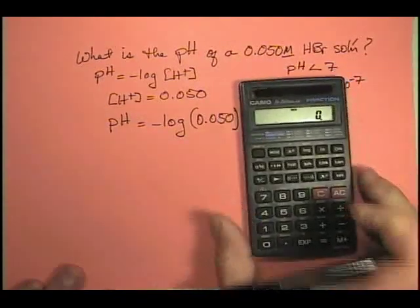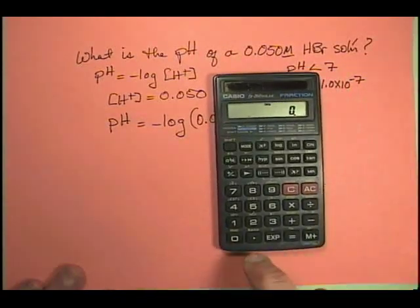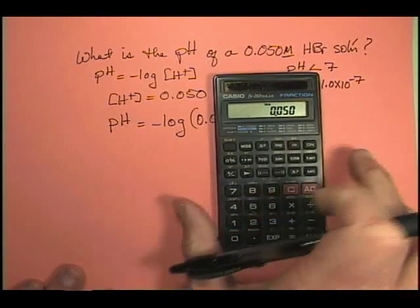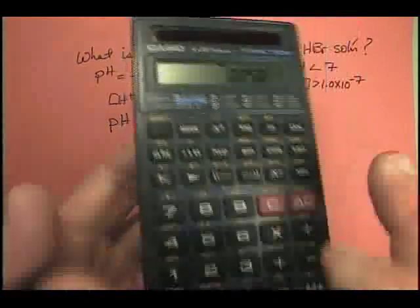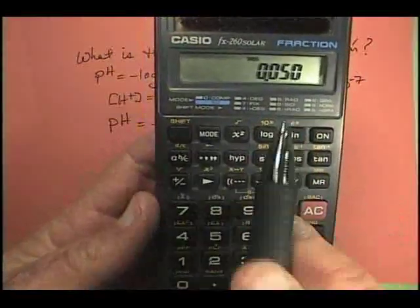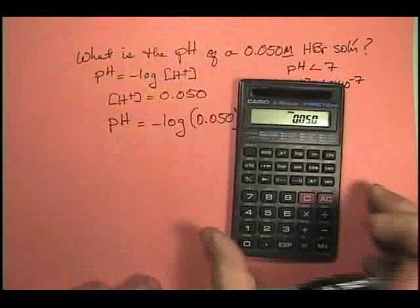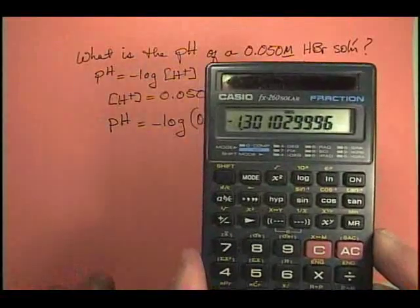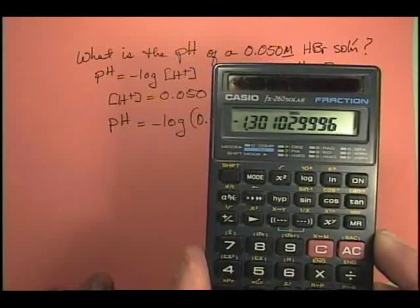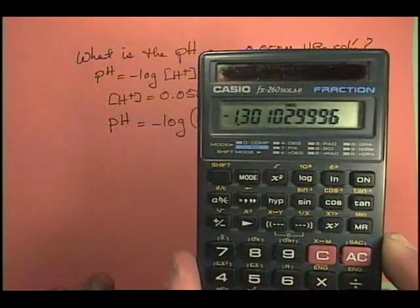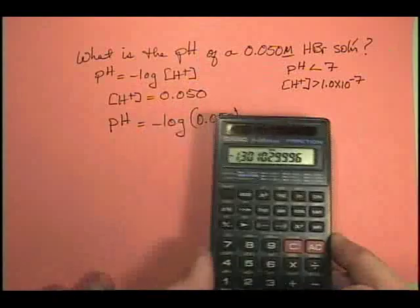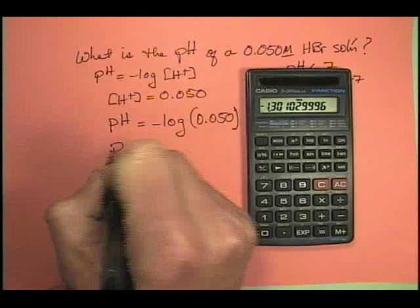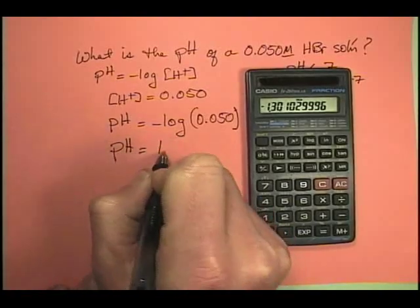What do we get? Well, I go ahead and put this in. 0.050. Now I'm going to hit the log key. There it is. Right there. Go ahead and hit log. And I get negative 1.301. Well, remember it's the negative of the log. So a negative times a negative is positive. So the pH is equal to 1.3.